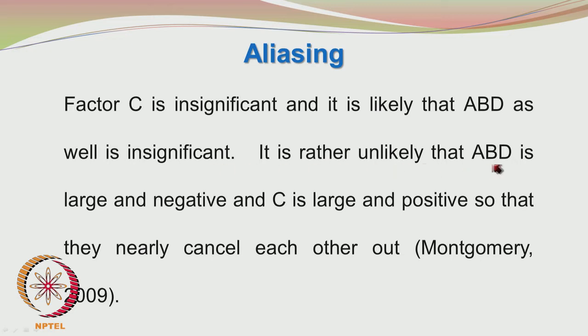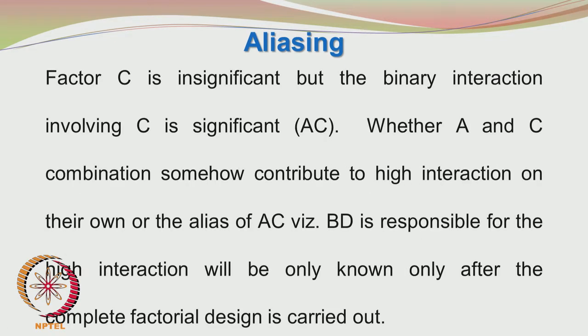To repeat the same thing: main effects are aliased with 3-factor interactions, and 2-factor interactions are aliased with the other 2-factor interactions. To emphasize: factor C was considered to be insignificant and it is likely that ABD is also insignificant. It is rather unlikely that ABD is large and negative and C is large and positive so that they nearly cancel each other out, as said by Montgomery 2009.